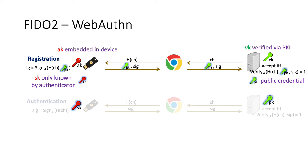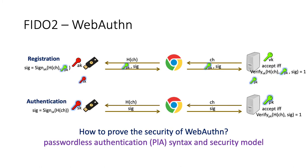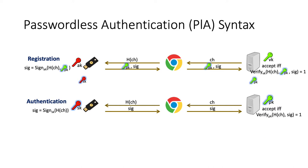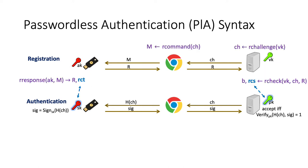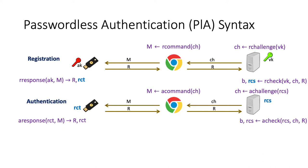When the server receives the public key and signature, it uses its verification key V to verify it, and if the signature is valid, it accepts the registration and registers the public key as the public credential. The secret key generated by the token and the public key registered on the server can later be used for authentication. Now we have a full picture of the WebAuthn protocol. To prove its security, in cryptography we need to first define a general syntax that captures this protocol and a security model. We call this kind of protocol a passwordless authentication protocol, or PLA protocol. Our PLA protocol captures authentication protocols with a challenge-response scheme. We use general functions to model different behaviors of the parties and use a so-called registration context to model the output credentials.